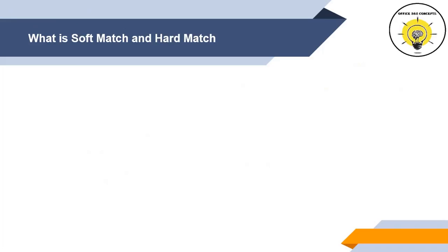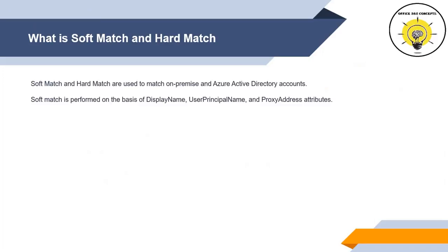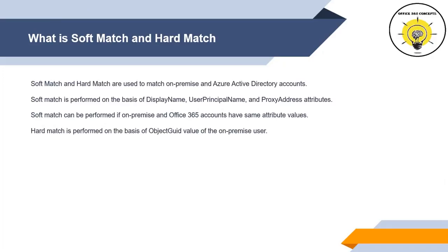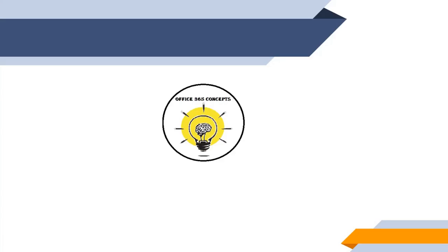Now let's summarize what we have covered in this session. Soft match and hard match are used to match on-premise and Azure Active Directory accounts. Soft match is performed on the basis of display name, user principal name, and proxy address attributes, and can be performed if both accounts have the same attribute values. Hard match is performed on the basis of the object GUID value of the on-premise Active Directory account — we stamp the object GUID value to the immutable ID attribute of the Office 365 account, and hard match is used when both accounts do not have the same attribute values. If you have learned something new, please write in comments and subscribe to the channel. Thank you guys, take care.